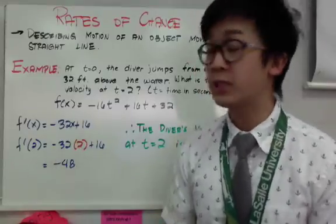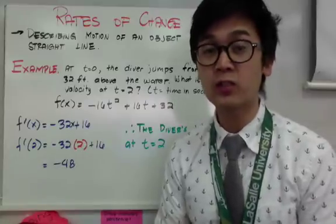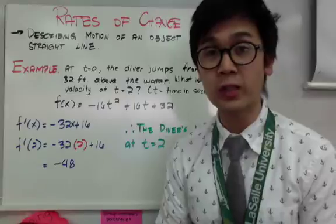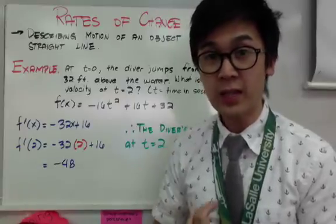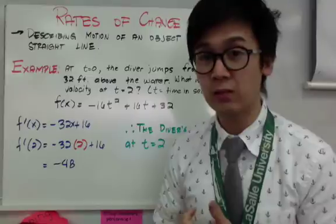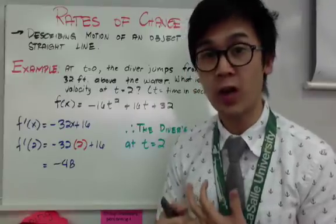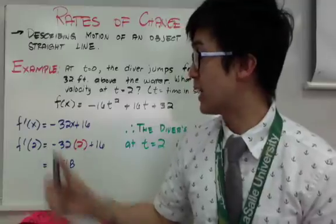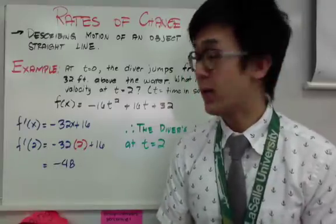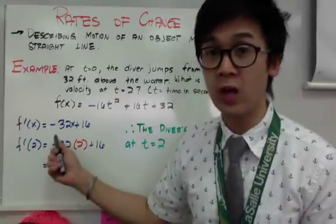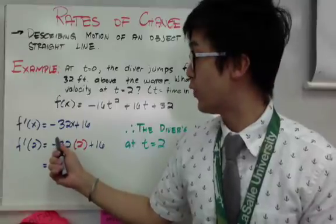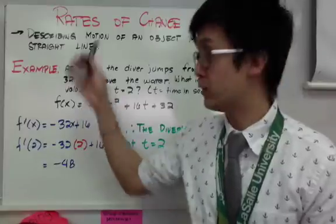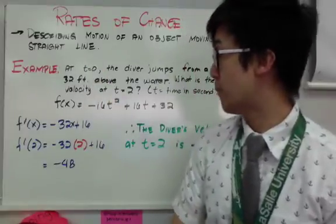To find the velocity of the diver, we need to find the first derivative of our function. The first derivative always gives the velocity, and the second derivative applies for acceleration. Since we are looking for velocity, we're just finding the first derivative of our function, and it gives us -32x + 16. This is the function for the velocity that we will use to find the velocity at t equals 2 for this diver jumping from the 32-foot platform.